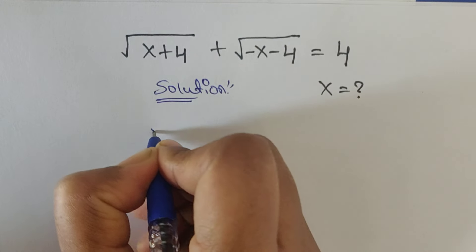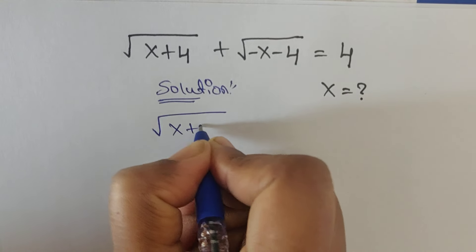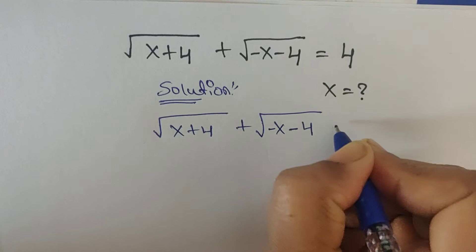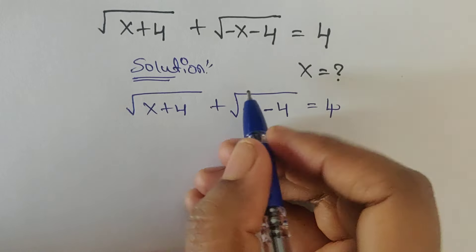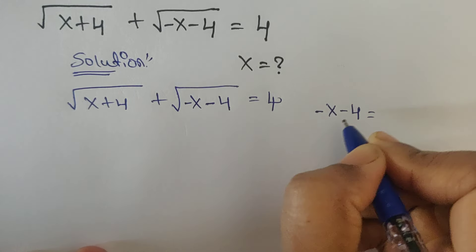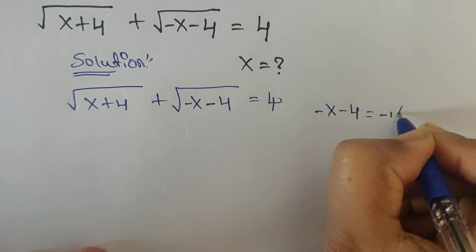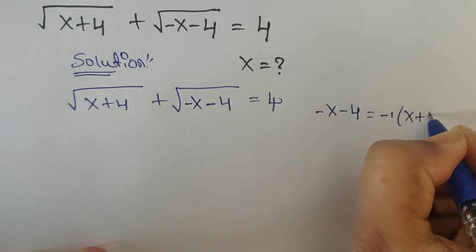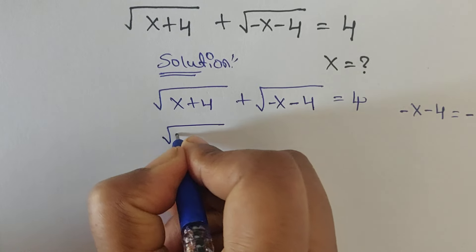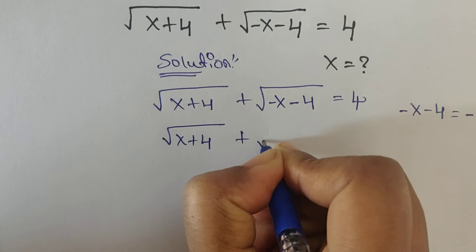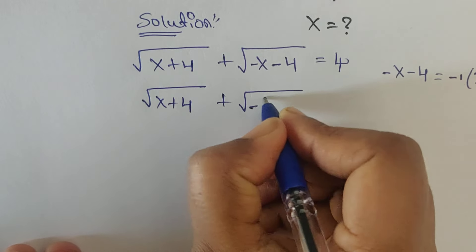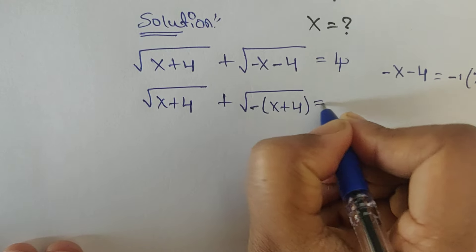The question is: square root of (x plus 4) plus square root of (minus x minus 4) equal to 4. Here we can write minus x minus 4 by taking out minus 1 as a common, giving us minus(x plus 4). So the equation becomes square root of (x plus 4) plus square root of minus(x plus 4) equal to 4.